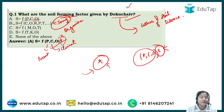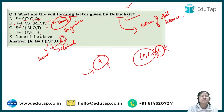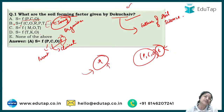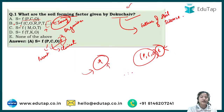Also, in Dokuchaev's formula, there are dots representing unnamed factors with some time effect according to him. Don't ignore them while studying.